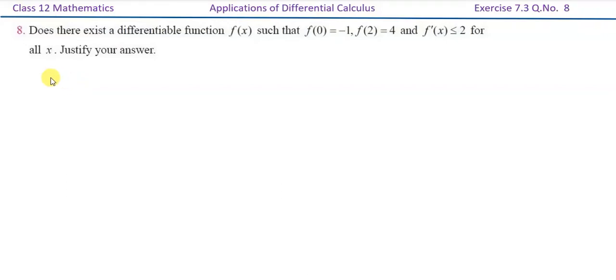In this video we will solve plus two mathematics unit 7, exercise 7.3, question number 8. Does there exist a differentiable function f of x such that f of 0 is equal to minus 1, f of 2 is equal to 4, and f dash of x less than or equal to 2 for all x? Justify your answer.